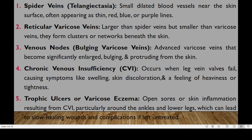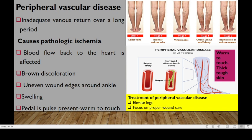The last stage is the trophic ulcers or varicose eczema. The patient is going to have open sores. Skin inflammation will result from this chronic venous insufficiency, particularly around the ankles and the lower legs, which could lead to slow healing of wounds and complications if left untreated. Generally, these conditions are caused by blood flow back to the heart being affected. The patient will have brown discoloration and edema around ankles, especially in the trophic ulcer or varicose eczema stage five. The defining feature is that the pedal pulse will be present, and the area will be warm to touch.